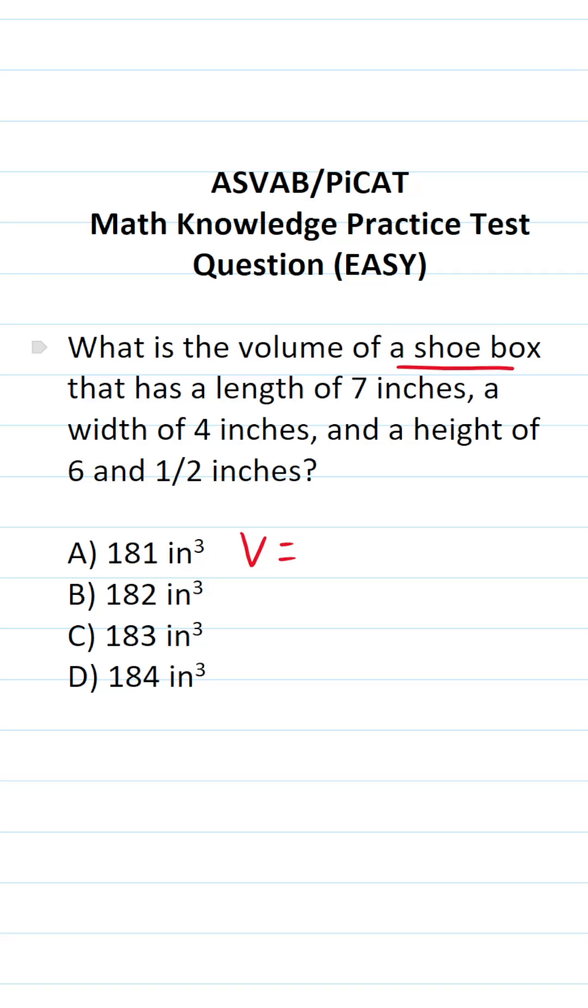In this case, we're trying to find the volume of a shoebox, which is a rectangular prism. So its volume is going to be length times width times height.